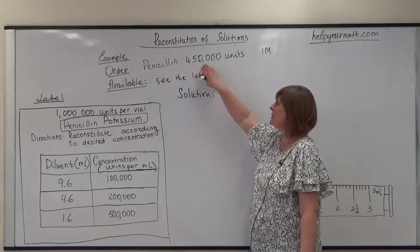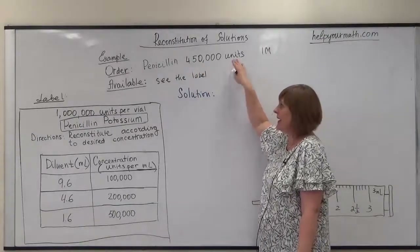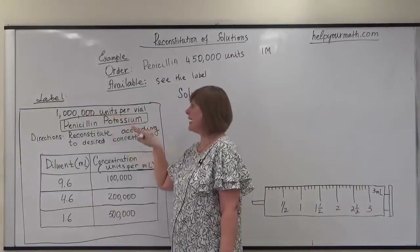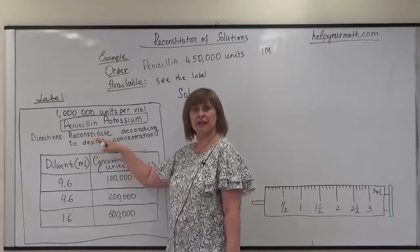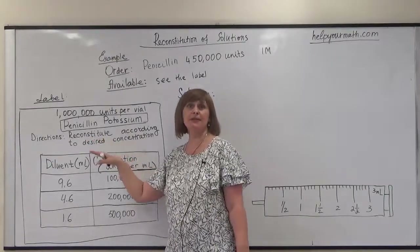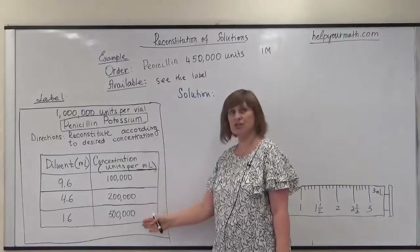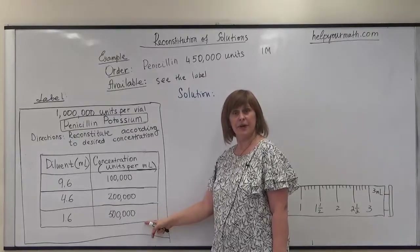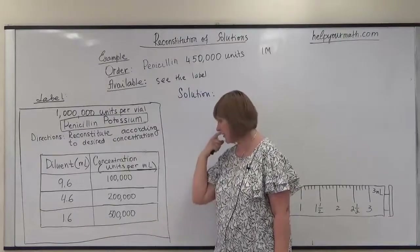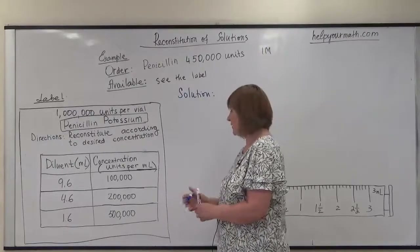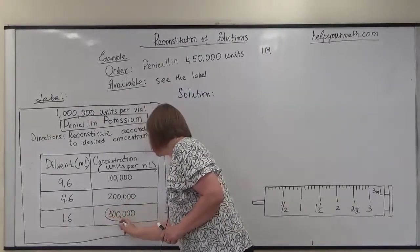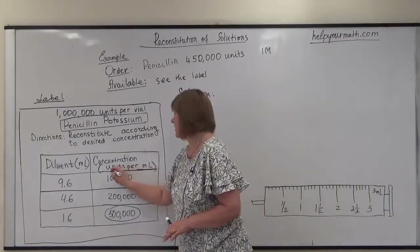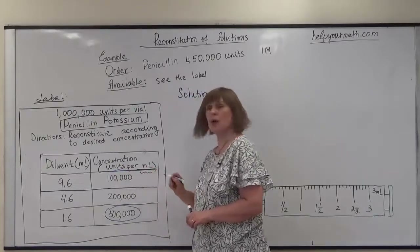So, penicillin 450,000 units is ordered. Available, we have the label: 1 million units per vial, and we need to choose the right reconstitution. Remember that we always need to choose the concentration which is closest to our order. In our case we have 500,000 — which is half a million — and this will be our dosage strength: units per 1 milliliter.